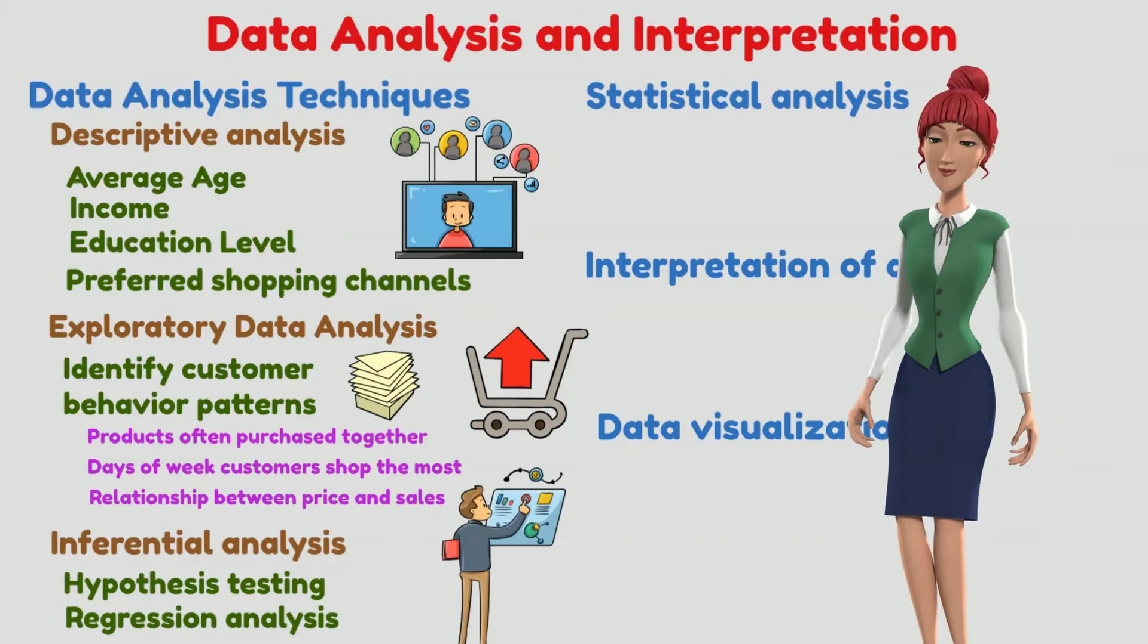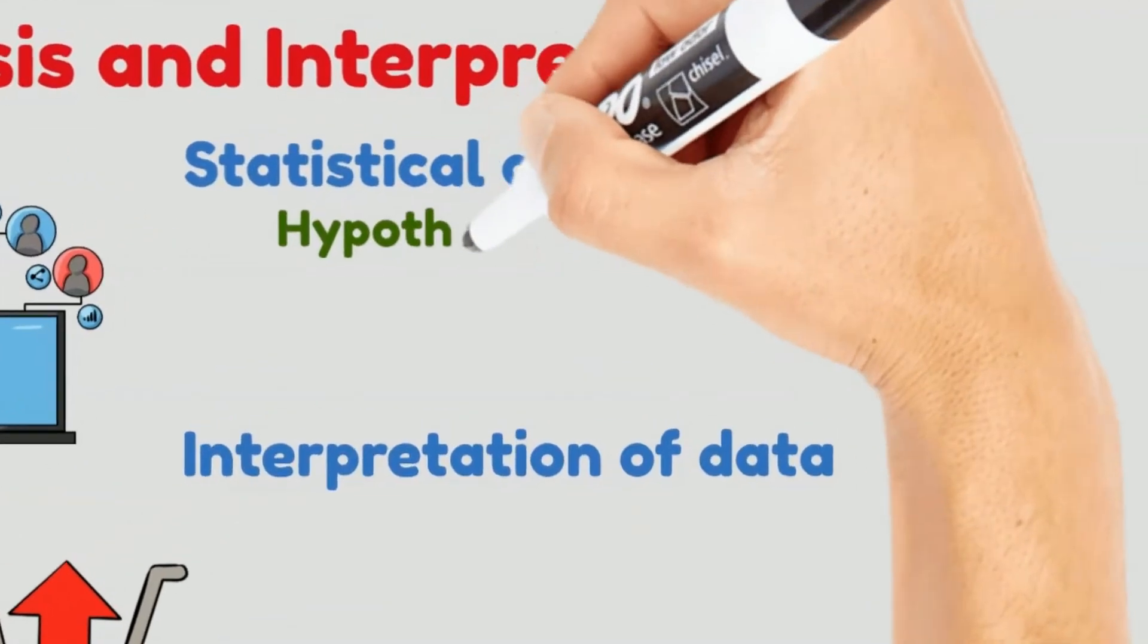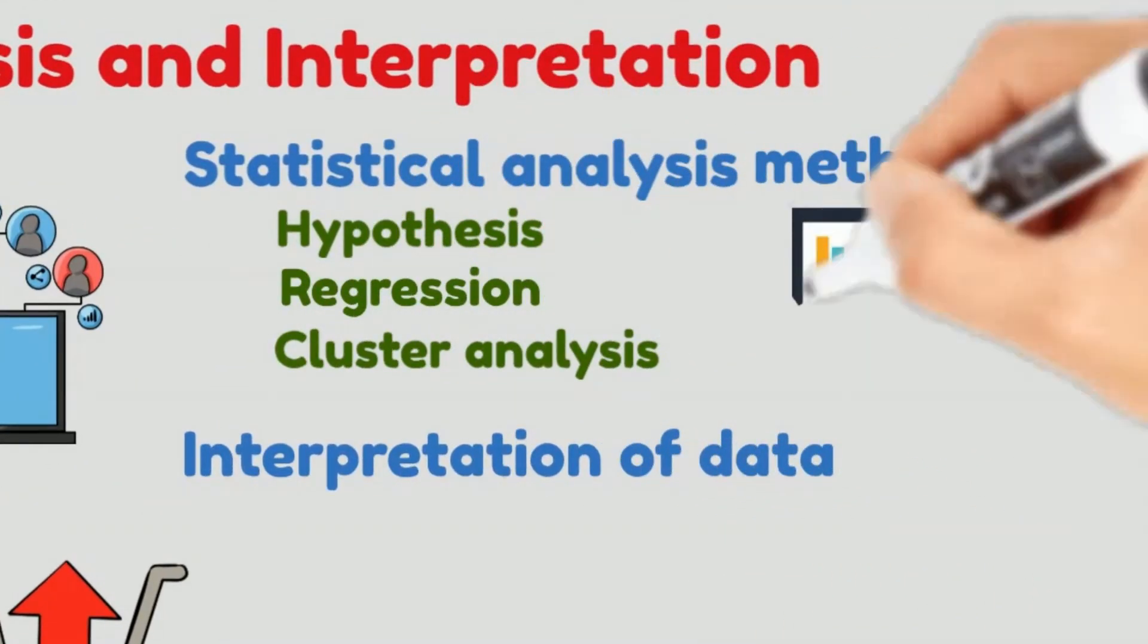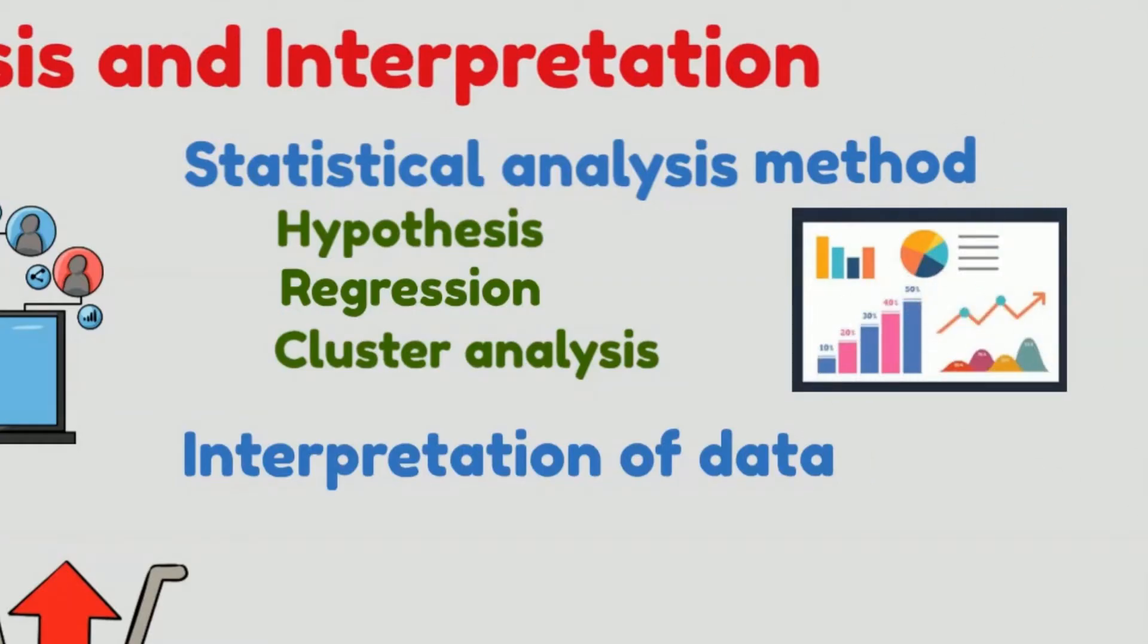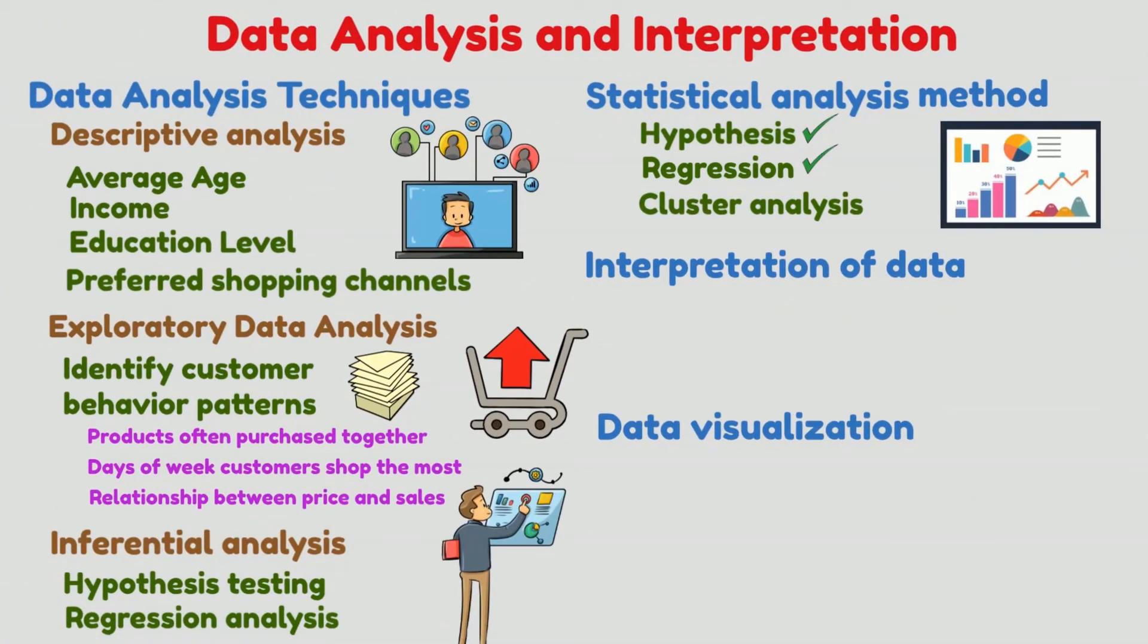Statistical analysis methods such as hypothesis testing, regression analysis, and cluster analysis can be used to analyze data. Hypothesis testing is a statistical method used to evaluate the validity of a claim about a population. Regression analysis is a statistical method used to examine the relationship between two or more variables. Cluster analysis is a statistical method used to group similar objects or individuals based on their characteristics.